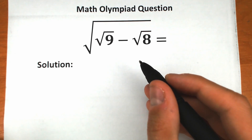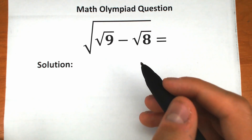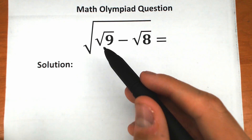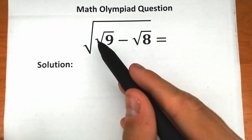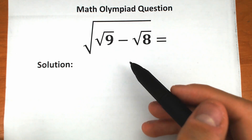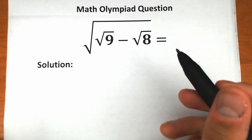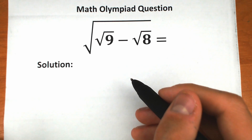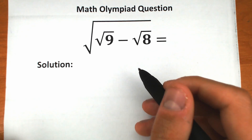Welcome to my channel Higher Mathematics. Today we have a really interesting challenge: we should simplify this expression. We have the square root of the square root of 9 minus the square root of 8. In this video I'm going to fully explain how we're going to do this correctly, step by step.